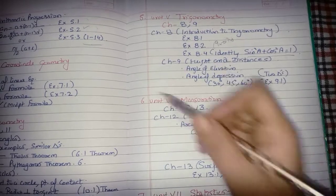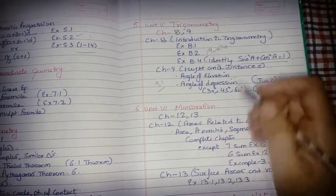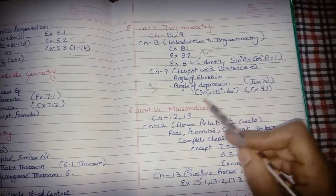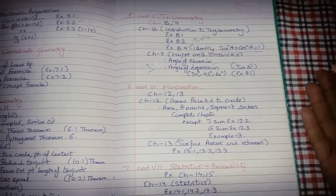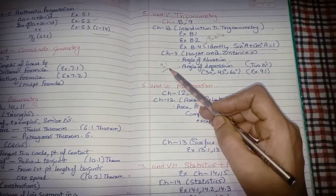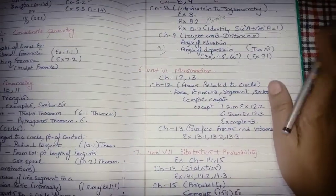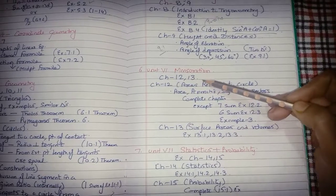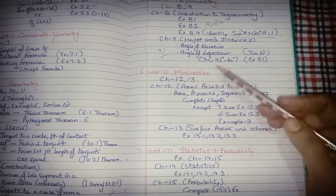For Chapter 9, Heights and Distances: prepare angle of elevation and angle of depression - that is, the complete exercise 9.1. The important angles are 30°, 45°, and 60°. Nothing is to be skipped from Chapter 9; prepare the complete chapter.